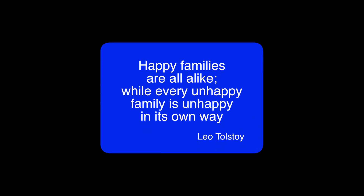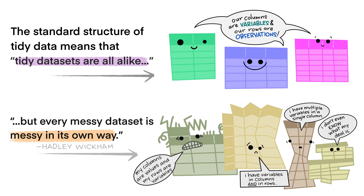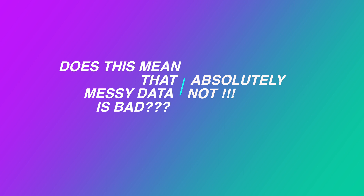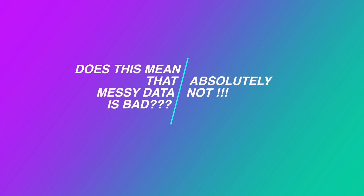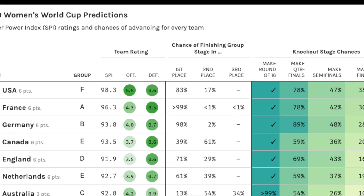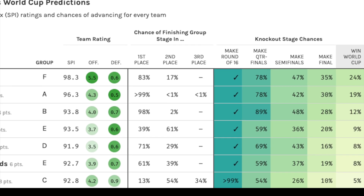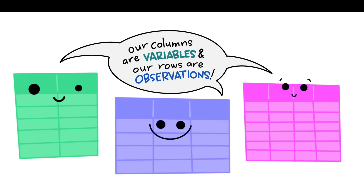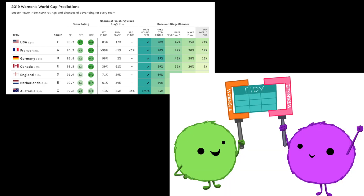Leo Tolstoy once said, happy families are all alike, while every unhappy family is unhappy in its own way. Like families, tidy datasets are all alike, but every messy dataset is messy in its own way. Does this mean that messy data is bad? Absolutely not. Messy datasets might be very convenient for data collection and for having a good overview of the whole dataset, containing all the information we have, including explanatory columns, commentaries, colors, etc. However, while useful for you, it is useless for statistics, which needs only variables and observations. So you might end up having two tables — one for you, and the other one for statistical analysis.